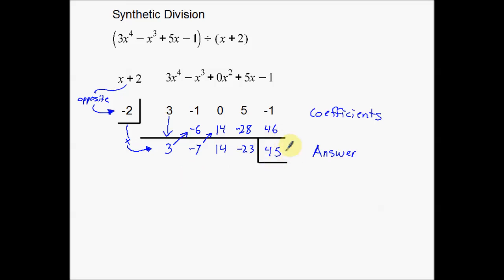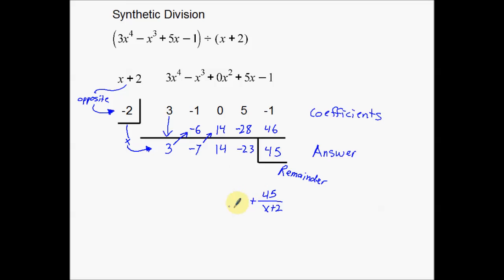Now we need to rewrite our answer. The last number in the bottom row — 45 — is unique: this is the remainder. Just like in polynomial long division, the remainder gets written as a fraction over what we're dividing by, so it becomes 45 over x plus 2. Now I'm going to write the other numbers in reverse order. This negative 23 is my constant term, so it becomes minus 23.